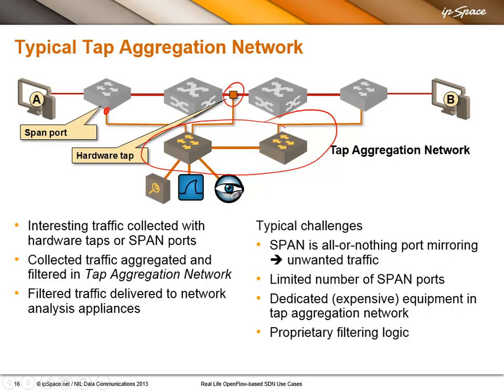The tap aggregation network would be the bridge between the collection points and the tools that you have deployed somewhere at a central location in the data center, so that you can use them and bring any traffic to those points. Ideally, the tap aggregation network would also perform filtering so that the analysis tools wouldn't be overloaded.